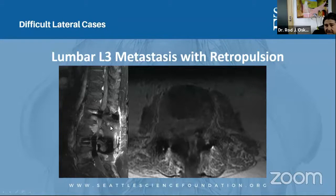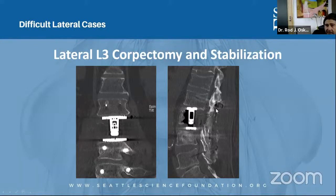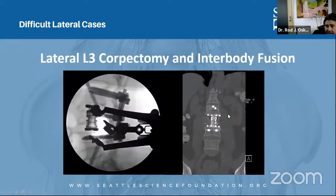Here's another metastatic case — a patient with L3 metastasis and retropulsion. You can see the significant amount of retropulsion present. We went in, took out the entire vertebral body, achieved excellent reconstruction of lumbar lordosis, placed a nice interbody device with good anterior column support, then went posterior and stabilized the spine. This is a separate case but the same level — an L3 corpectomy — where we put short segmental fixation at the corpectomy site, one level above and one below.